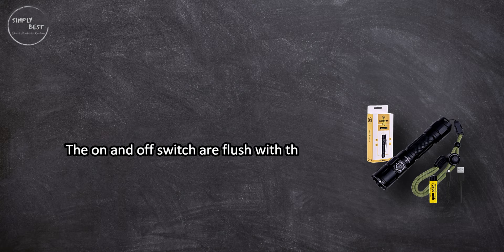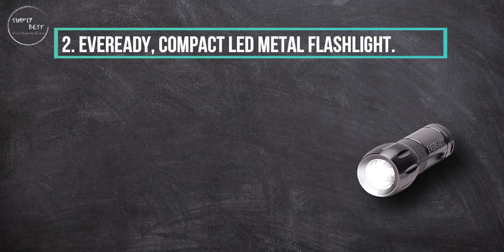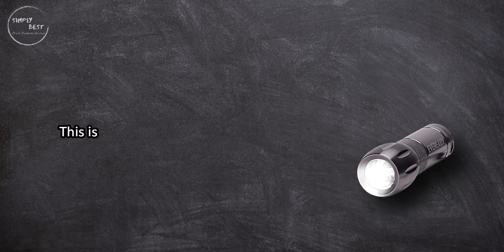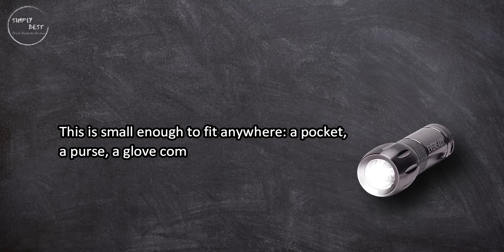The on and off switch are flush with the light itself, making it hard to locate in the dark. At number two, Eveready compact LED metal flashlight.